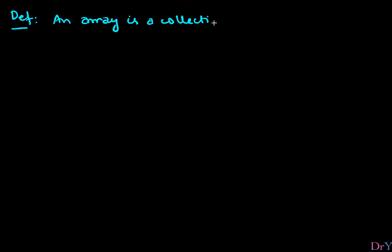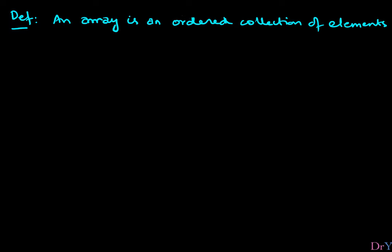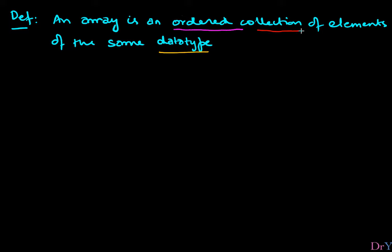Let's begin with a quick recap of what an array is. An array is an ordered collection of elements of the same data type. A few things to highlight: first, it's an ordered collection; second, there are elements and they all have to be of the same data type; and third, it's a collection, meaning there are multiple elements.